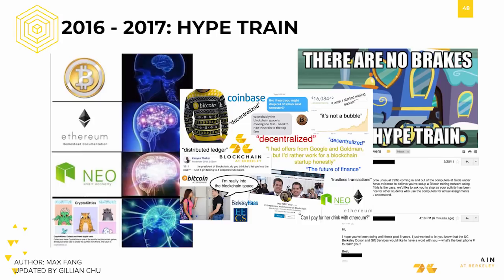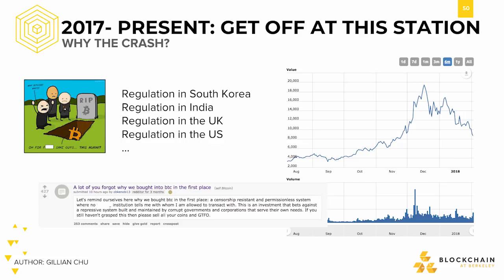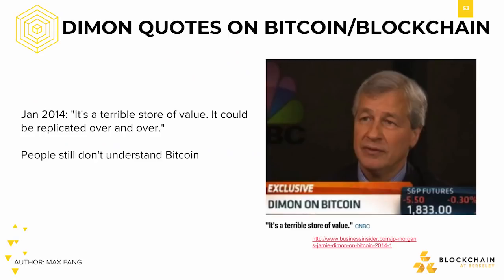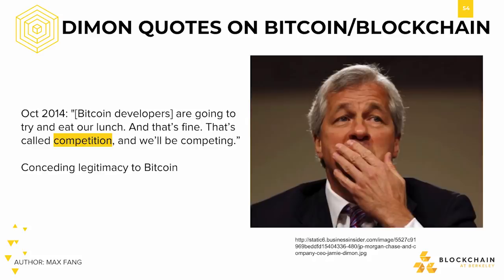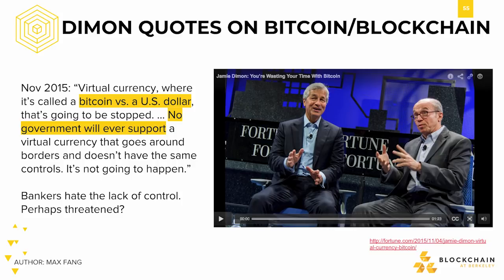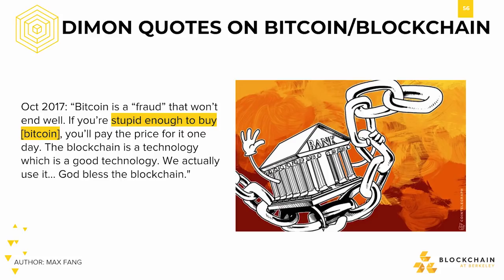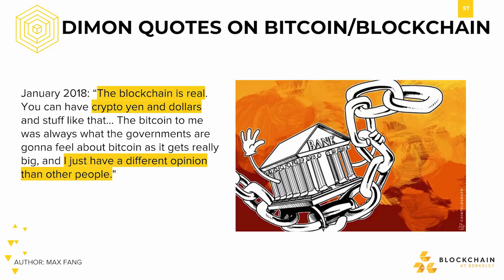But of course, what goes up must come down. With pushback from governments, many average investors started to back out. We then took a look at how the enterprise world viewed Bitcoin and blockchain. Jamie Dimon first said it's a terrible store of value and that it could be replicated over and over, only to concede later in 2014 that Bitcoin is in fact competition. He then said no government would ever support Bitcoin because it just doesn't have any control. Three years later, in October 2017, he called Bitcoin a fraud. But finally, in January 2018, he admitted that the blockchain is real, distinguishing blockchain from Bitcoin.